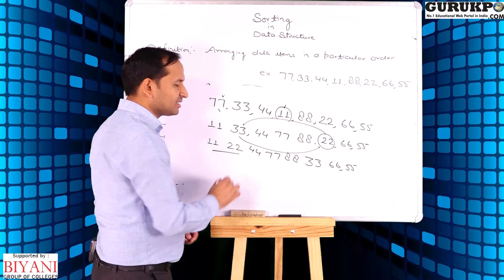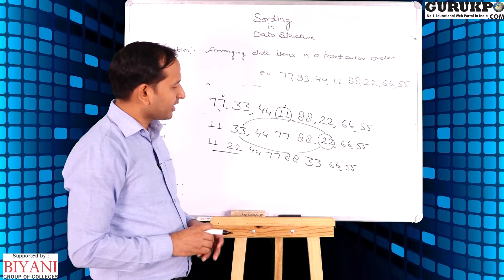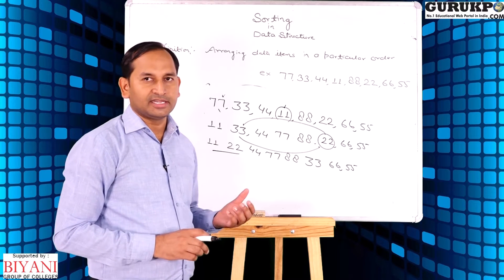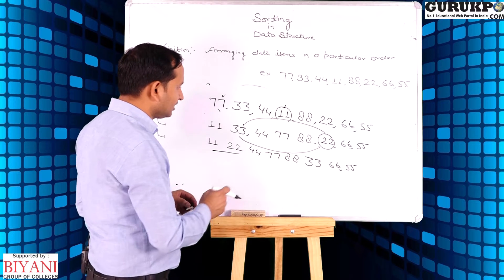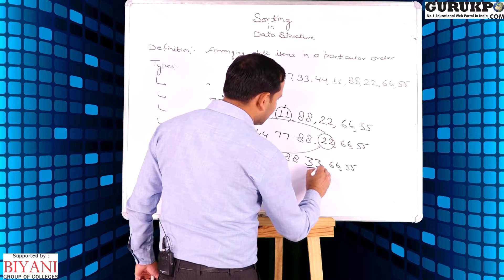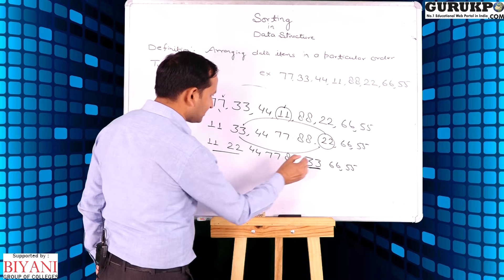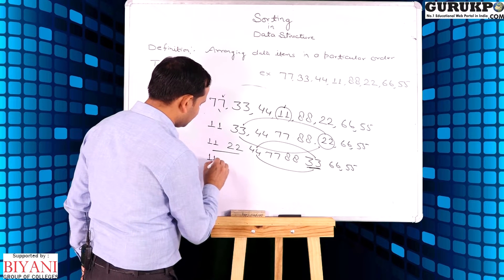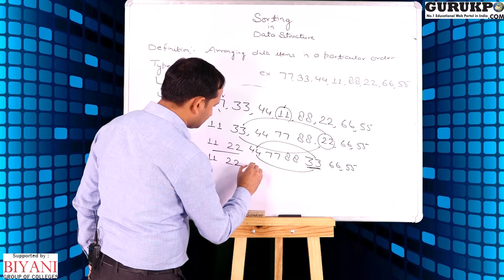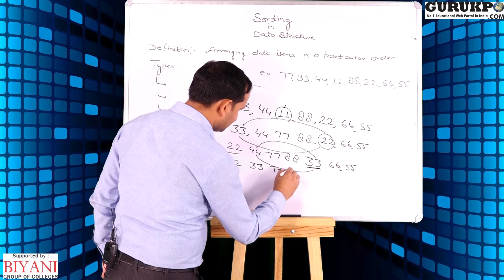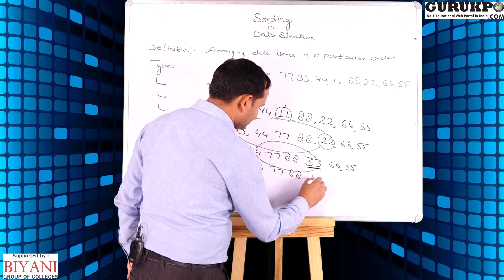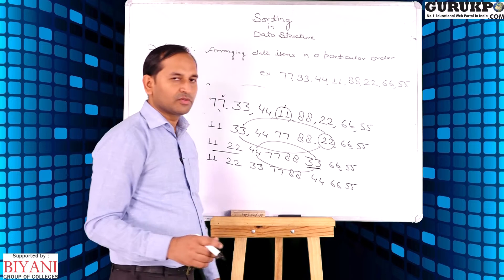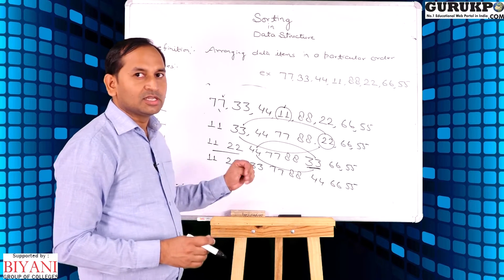Now these two elements are in sorted form. Again we apply looping and find out the third smallest element in the entire list and put it into the third place. The third smallest element is 33. We can shift 33 to the third place. We can observe the first three elements are already sorted.